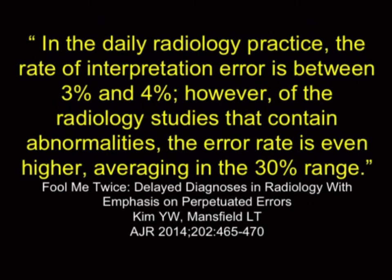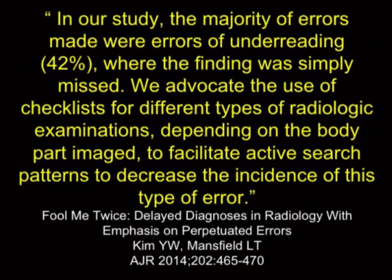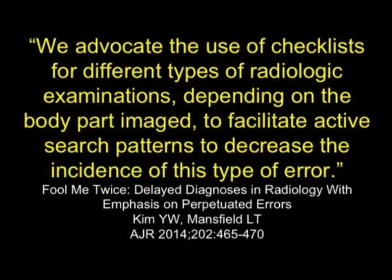Going back to the error rate — could you imagine a 30% error rate when there are positive findings, missing 3 out of 10? In our study, the majority of errors were under-reading where the finding was simply missed. Checklists are discussed as a way of not missing things, and I think they will become more important. It's important to think about what you might miss: look at the soft tissues, look at the sagittal bone, look at the lung windows, look for PE — all before even looking at the abdominal organs. Kim's article on checklists is a good framework for the things we commonly overlook.